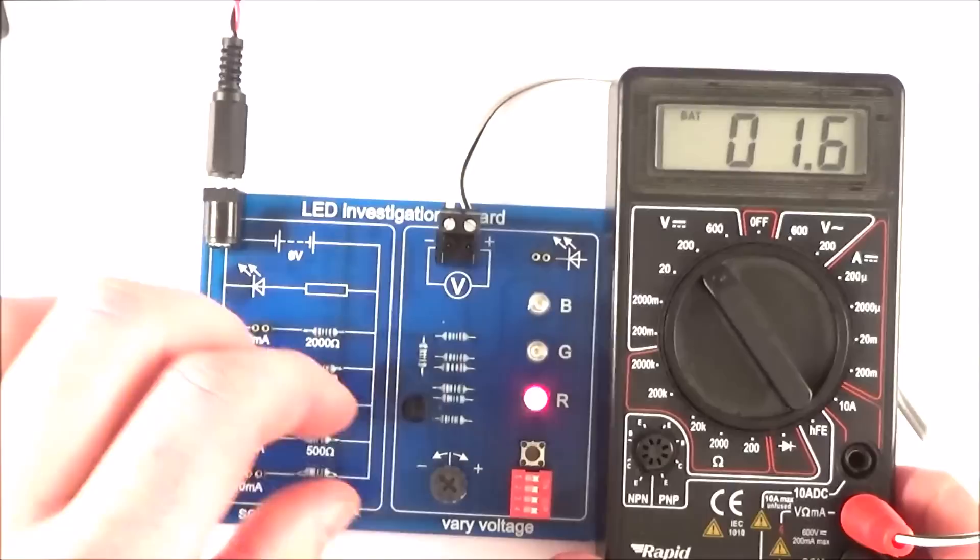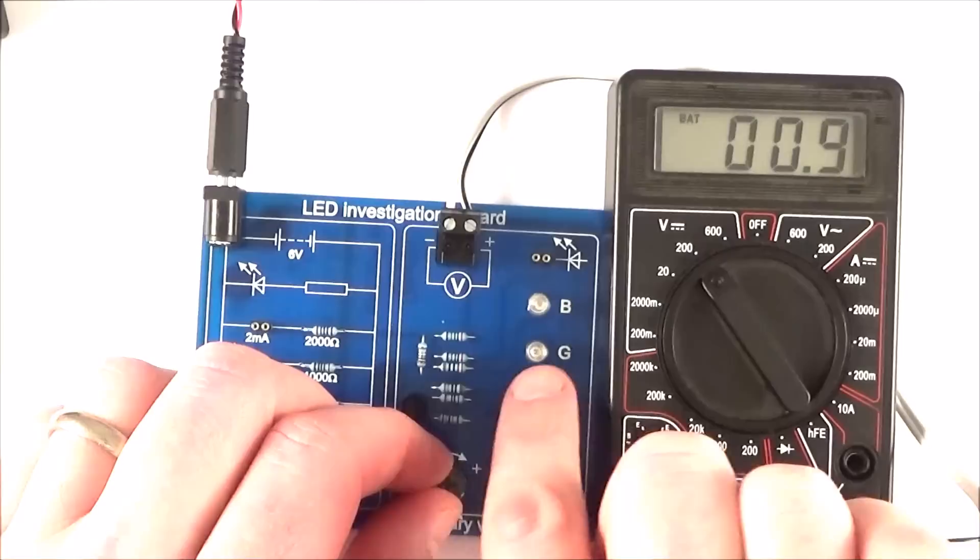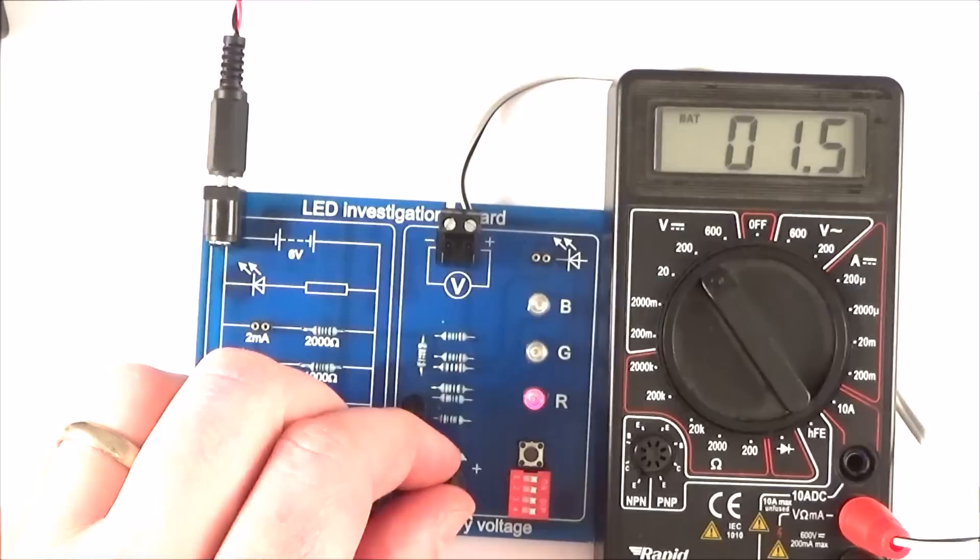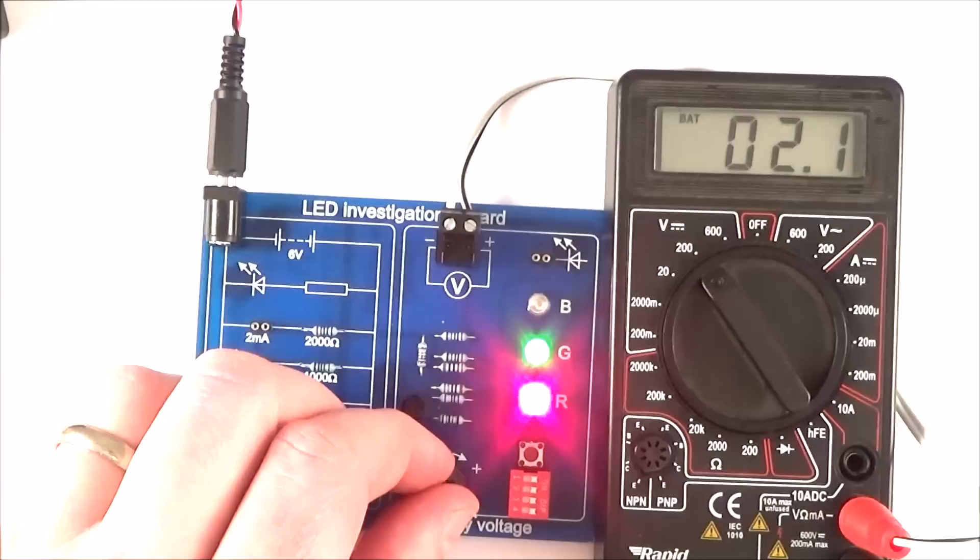As I just use the dial here to lower that down, what we can see is the potential difference across all of these LEDs. And as I start to increase that, we can see that the red LED comes on with a PD of about 1.5 volts. As I keep increasing the potential difference, the green one should turn on next. And we see that's a threshold voltage of about 2 volts. And then finally, the blue turns on, last of all, at a higher threshold voltage.